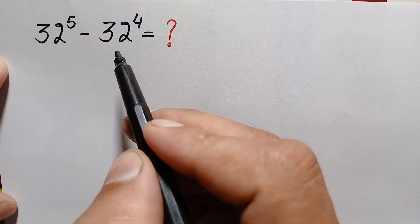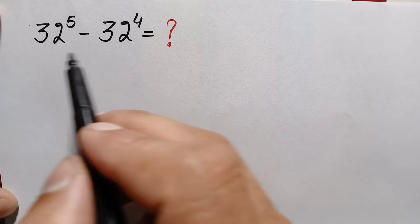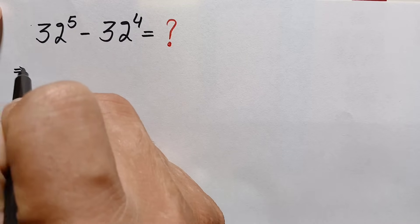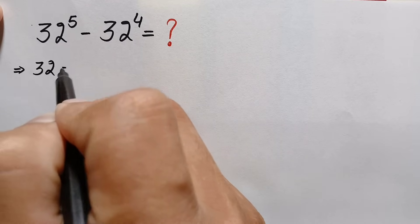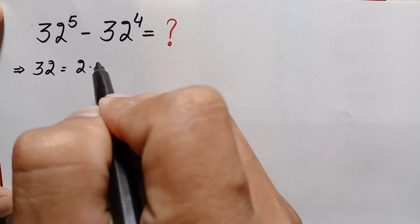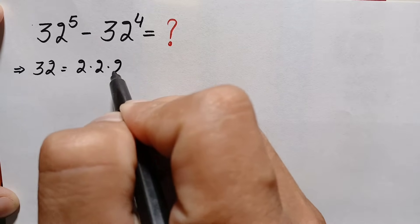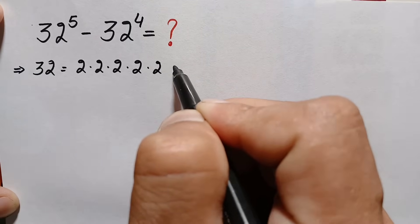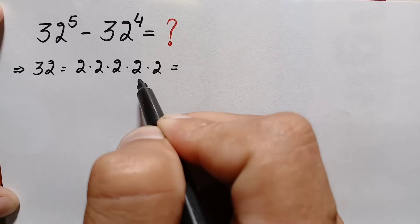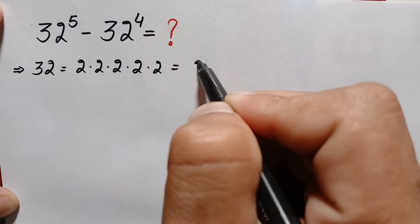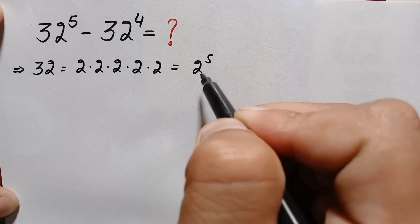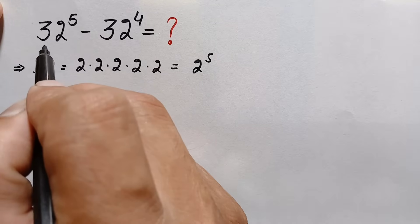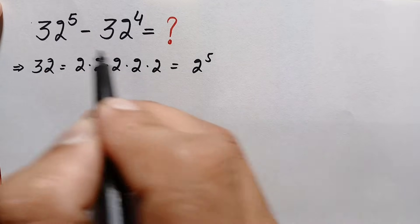First of all, we can write the base 32 in a different form. 2 times 2 is 4, 4 times 2 is 8, 8 times 2 is 16, and 16 times 2 is 32 — so 2 is multiplied 5 times. Therefore we can write 32 in exponential form as 2 raised to power 5. We will replace 32 with 2 raised to power 5.